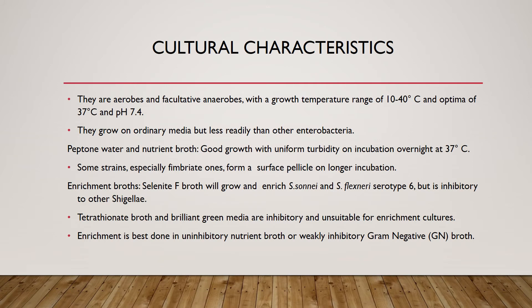Shigella are aerobic and facultative anaerobes with a growth temperature range of 10 to 40 degrees Celsius and an optimum of 37 degrees Celsius; pH should be 7.4. They grow on ordinary media but less readily than other enterobacteria. In peptone water and nutrient broth, they show good growth with uniform turbidity on overnight incubation at 37 degrees Celsius. Some strains, especially fimbriate ones, form a surface pellicle on longer incubation.